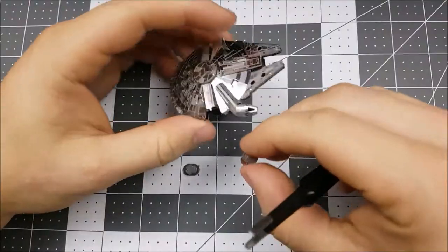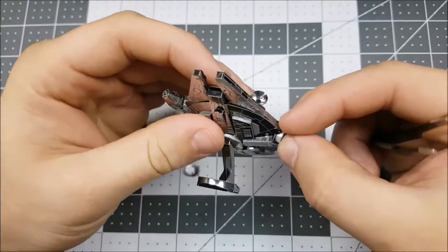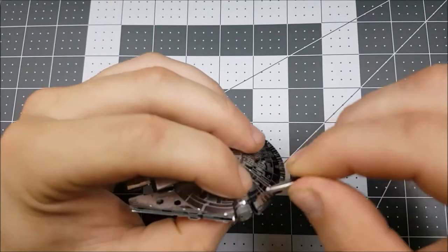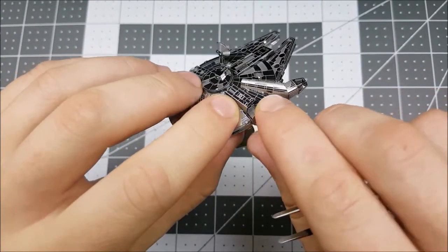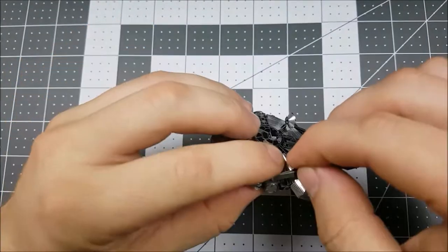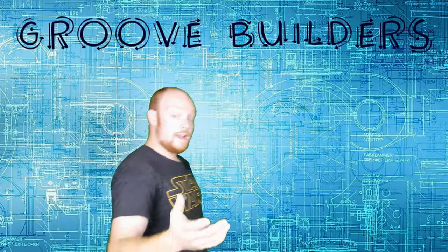With our two parts constructed, we can now add them to the Millennium Falcon on either side, securing them with nice tight bends. Alright, Groove Builders, we did it! We built ourselves the Millennium Falcon.